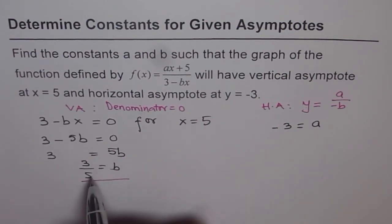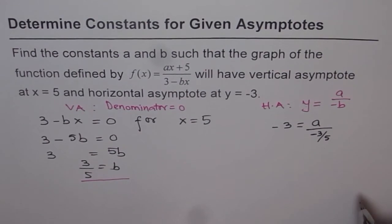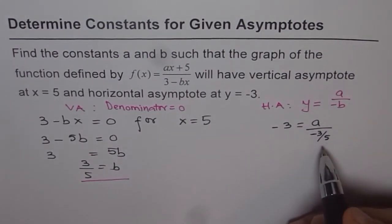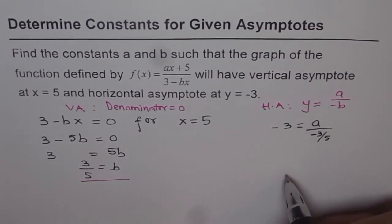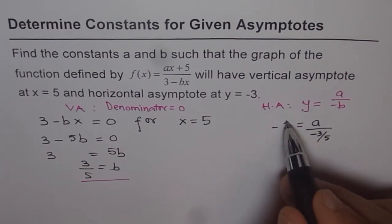So we can write this as a over minus 3 over 5, correct? So that is minus of b. So what is a equals to? So to find a, we need to multiply by this number, here.